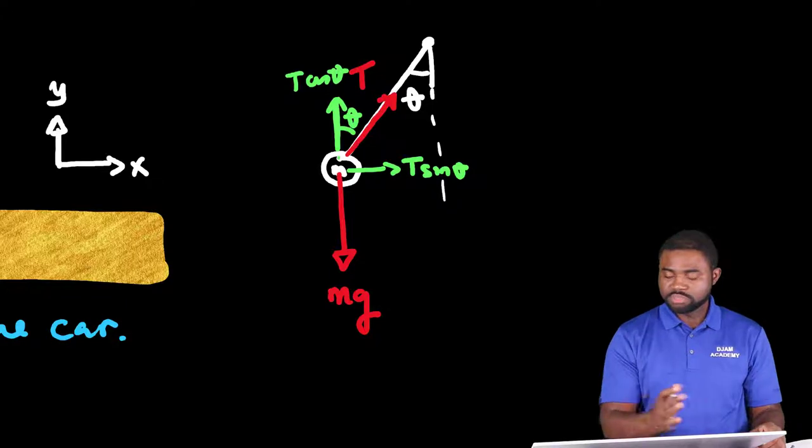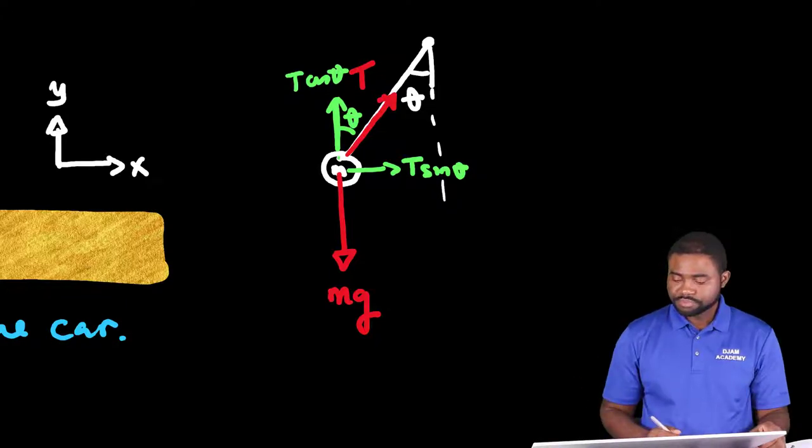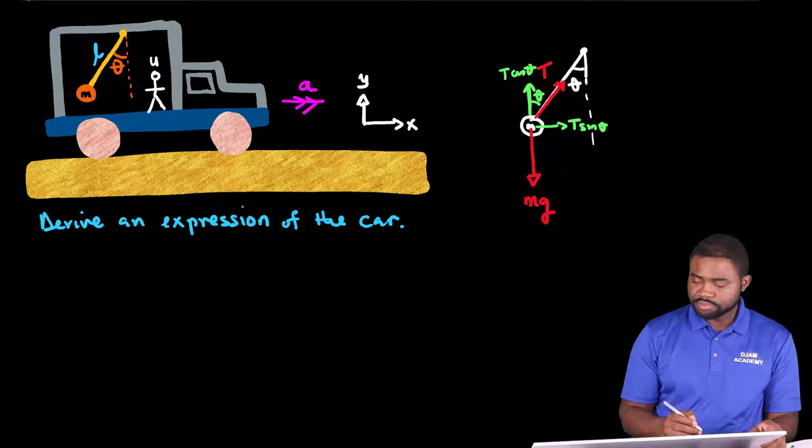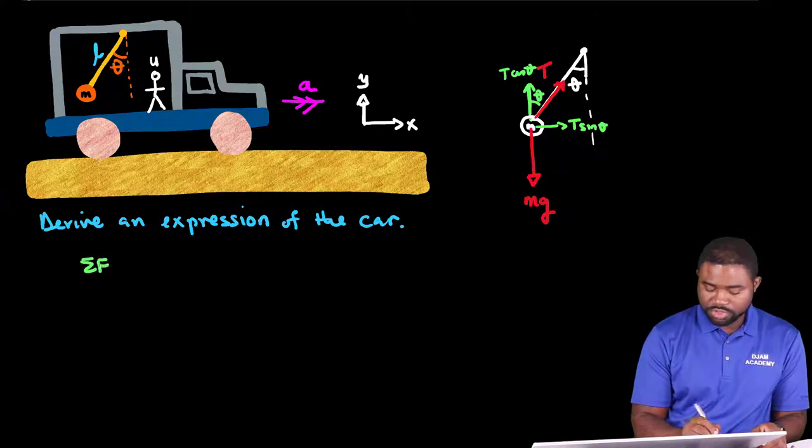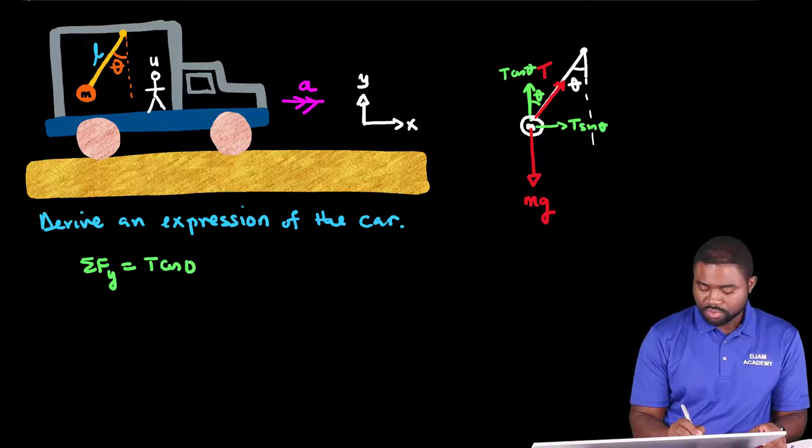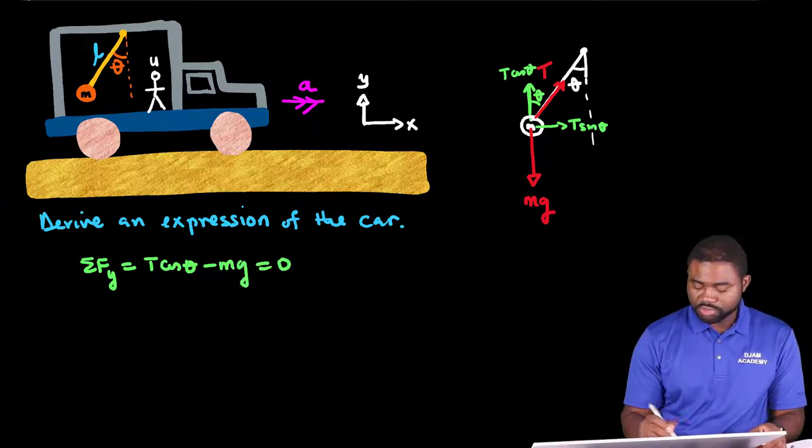Now the system is moving forward. So what this means is that the sum of forces along the y direction. This is T cosine theta minus mg. This will be equal to zero.